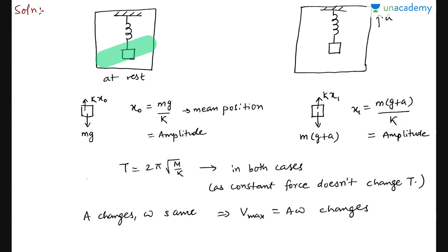In both cases, mg and (mg + pseudo force) are constant forces, so the time period remains 2π√(m/k). That's why time period does not change. Maximum speed will change because maximum speed = A·ω. Time period is the same so ω is the same, but amplitude has changed, so overall the product changes — therefore maximum speed will also change.